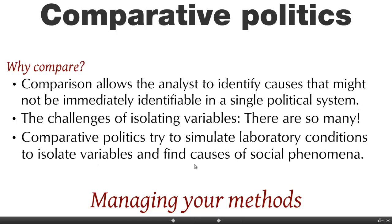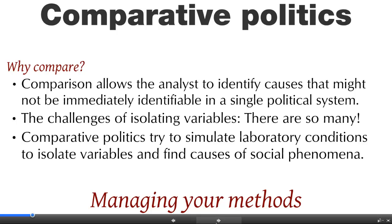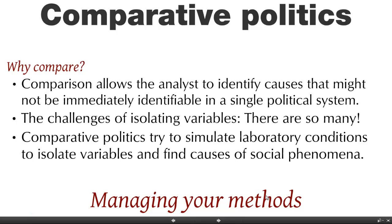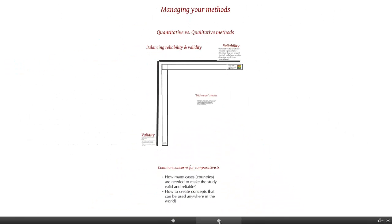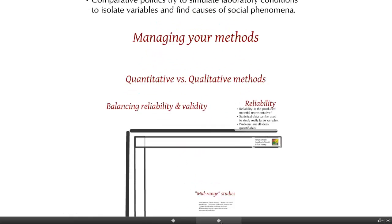So comparative politics is really a way to try and simulate laboratory conditions — to isolate variables and find causes of social phenomena. But to do so we need to manage our methods well. This is going to be an overview of what you need to think about to manage methods. Particularly, there is the tension here between quantitative and qualitative methods to consider.